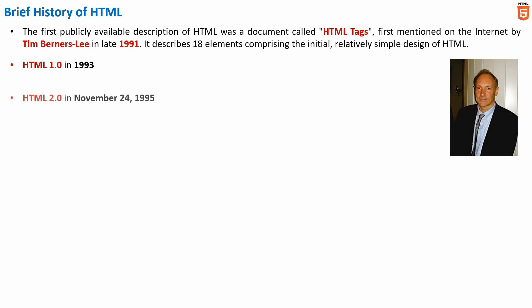Then we have HTML 2.0, which was released on November 24, 1995, which contained all the features of HTML 1.0, along with a few additional features added. This remained the standard markup language for designing and creating websites until January 1997.